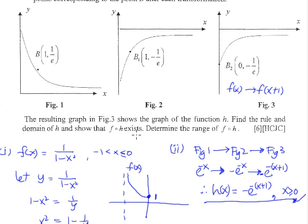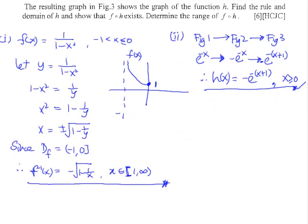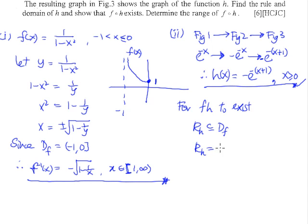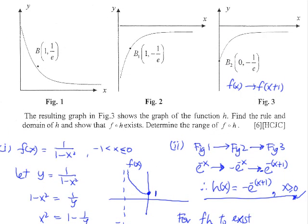Now, for f∘h to exist, the condition is that the range of h must be a subset of or equal to the domain of f. The first thing we want to figure out is the range of h. From the diagram it is rather obvious that the range of h(x) will be from negative 1 over e to 0.